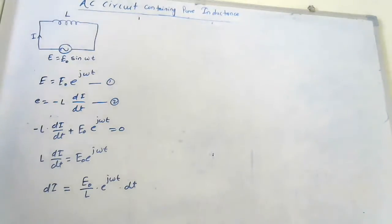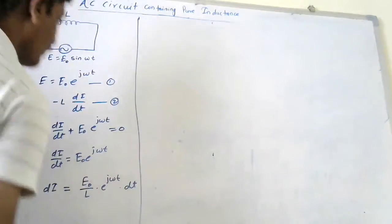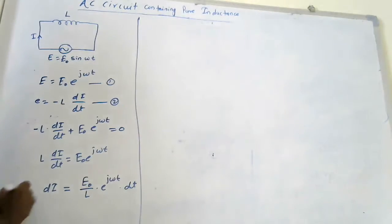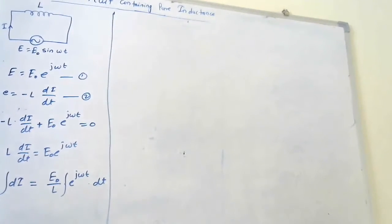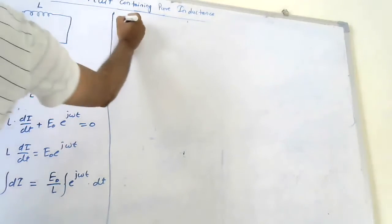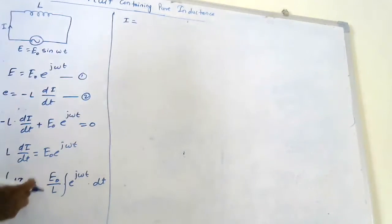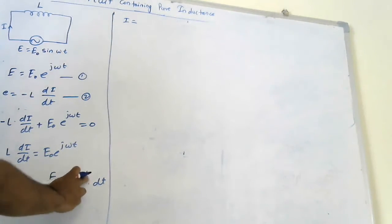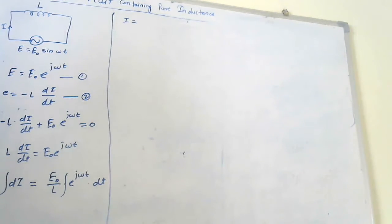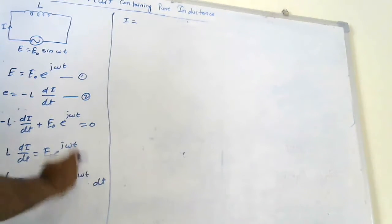Now we integrate the above equation. E0 upon L is a constant and goes outside the integration. The integration of e to the power jωt into dt is e to the power jωt upon jω. This gives us equation number 3.